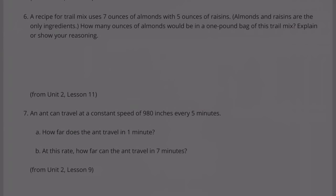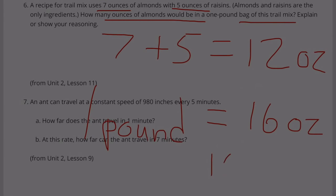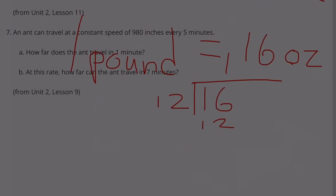Number 6: A recipe uses 7 ounces of almonds and 5 ounces of raisins. Almonds and raisins are the only ingredients. How many ounces of almonds would be in a one pound bag of this trail mix? 7 ounces of almonds plus 5 ounces of raisins equals 12 ounces total. I know that 16 ounces equals 1 pound. 16 divided by 12. 12 goes into 16 once. 16 minus 12 is 4.